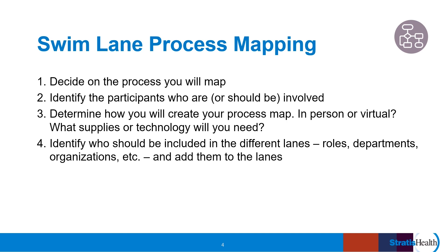Let's review basic steps for creating a swim lane process map. As with any type of process map, first decide on the process you will map. Identify your starting point and end point — this helps you define the clear scope of the process you will be mapping. Identify the participants who are or should be involved in the process you're diagramming. It bears repeating that you cannot process map well unless you involve the people who care about and are involved in the process. Involving those doing the work is an essential component of process mapping.